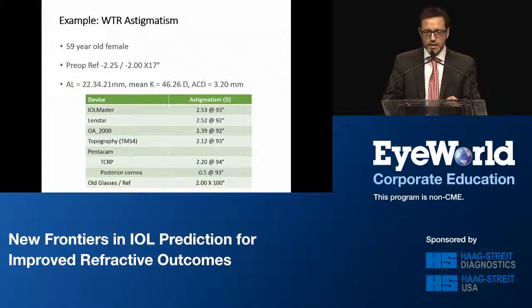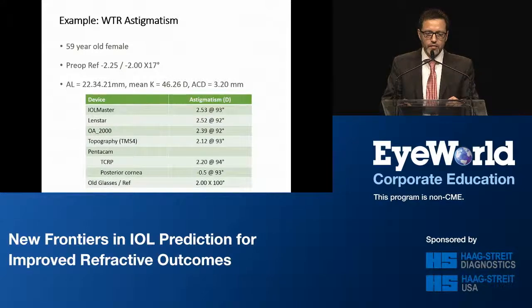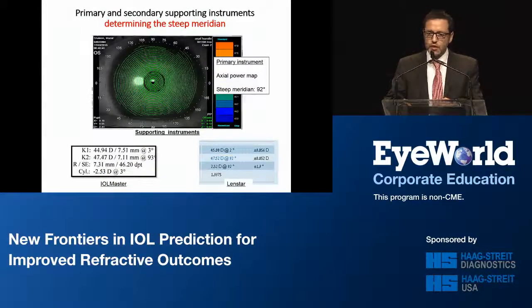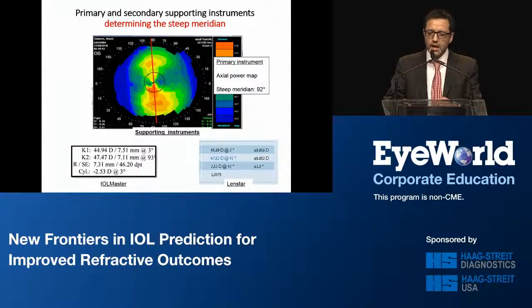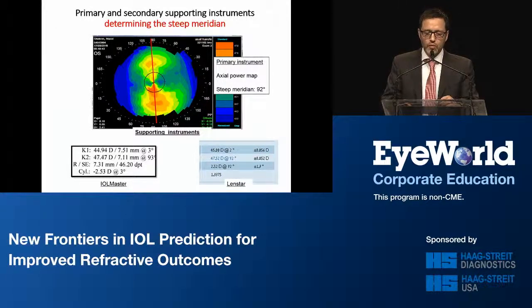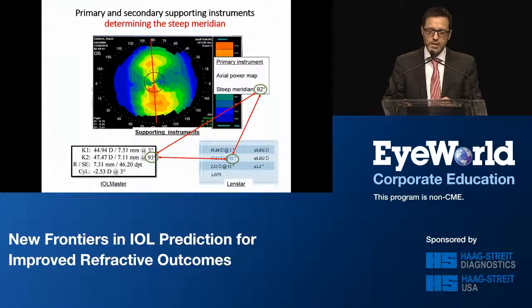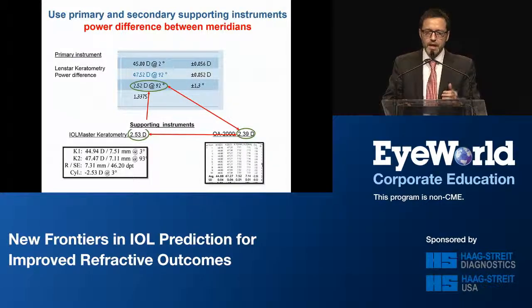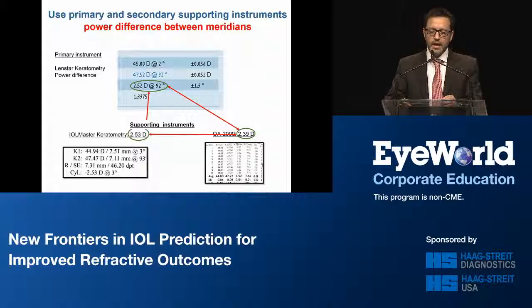I'd like to show you an example of one of my patients to see how this works. This is a 50-year-old female who had a cataract with pre-existing with-the-rule corneal astigmatism. We look at the mires to confirm they look good and validate that we are dealing with a symmetrical and regular astigmatism. Then we follow Warren Hill's methodology, using a primary and secondary supporting instrument to determine the steep meridian, and follow the same process for the power difference between the meridians, making sure our primary instrument is aligned with the validated steep meridian.